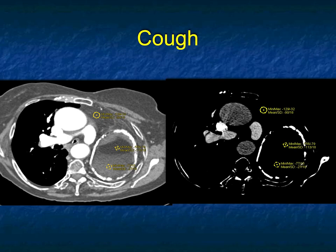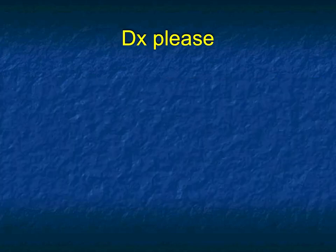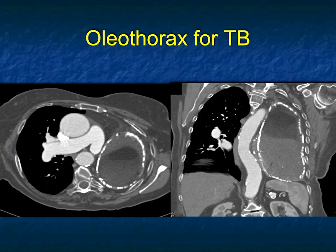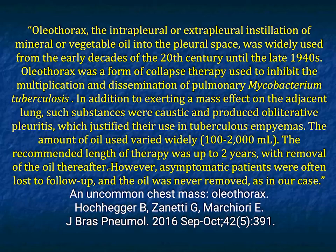If you're a more senior radiologist — the more senior the better — you would know what we're dealing with here. This was an oleothorax. Remember in the old days they put ping-pong balls in the chest, took out the lung and put ping-pong balls to get better aeration and compress the normal lung. Same thing with oleothorax — that was fat, olive oil put in the lung, and calcifications happened. Oleothorax is the intrapleural or extrapleural installation of mineral or vegetable oil in the pleural space, widely used till the late 1940s. It was a form of collapse therapy used to inhibit the multiplication and dissemination of Mycobacterium TB.